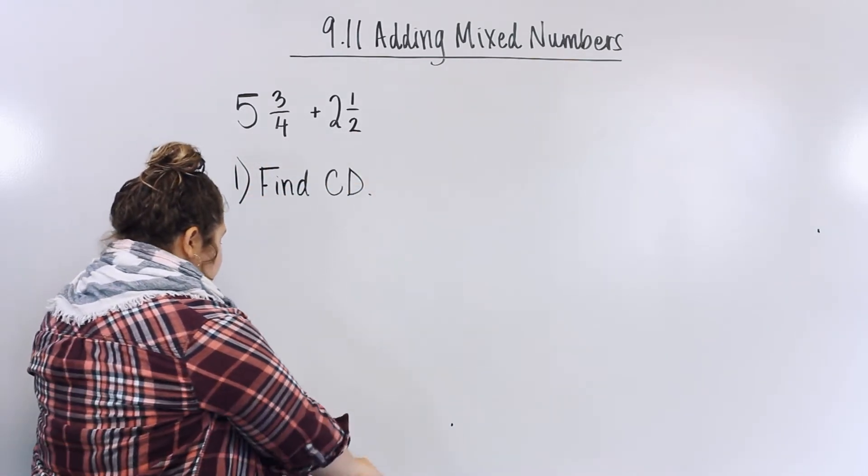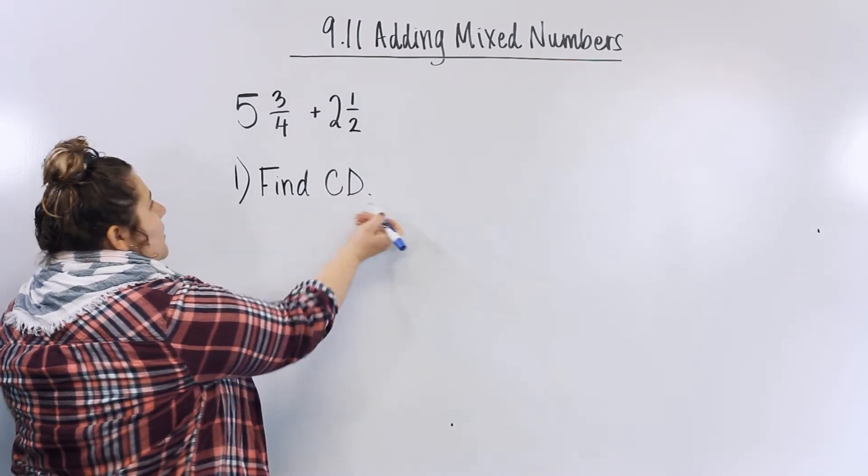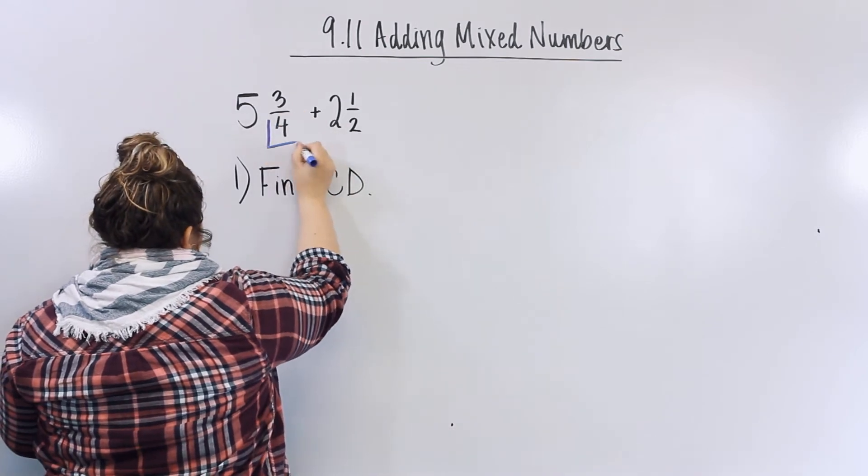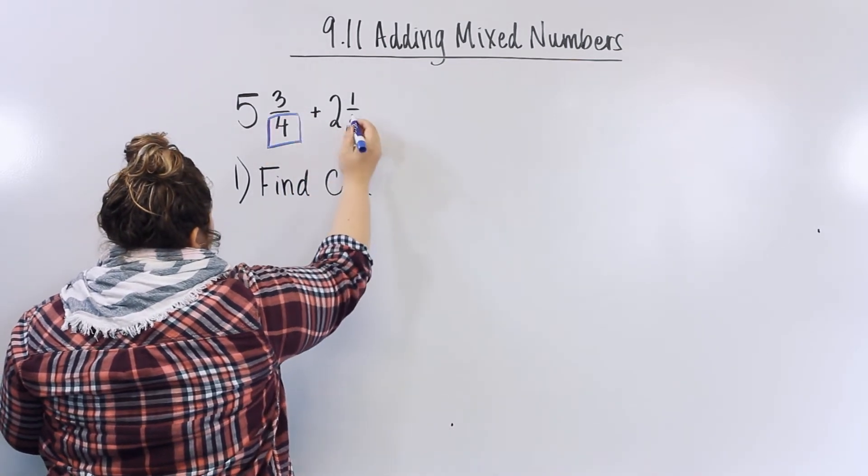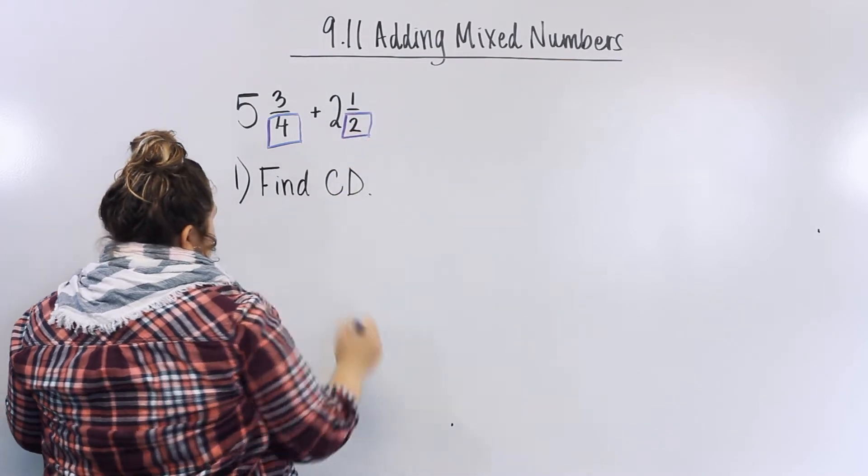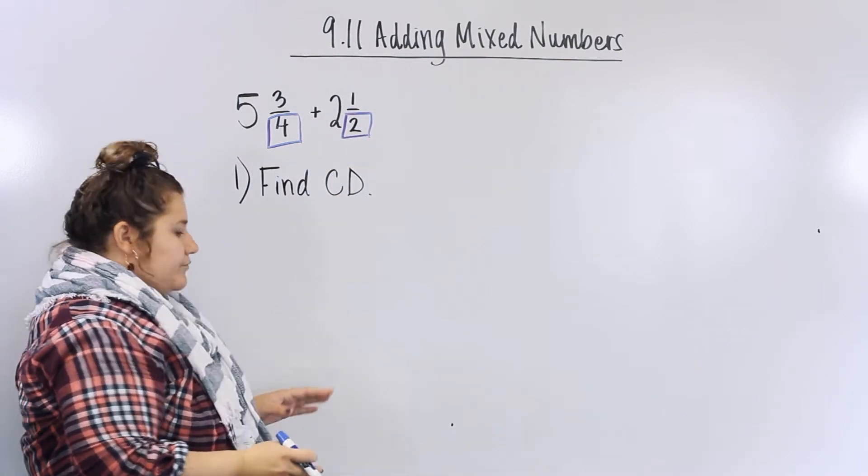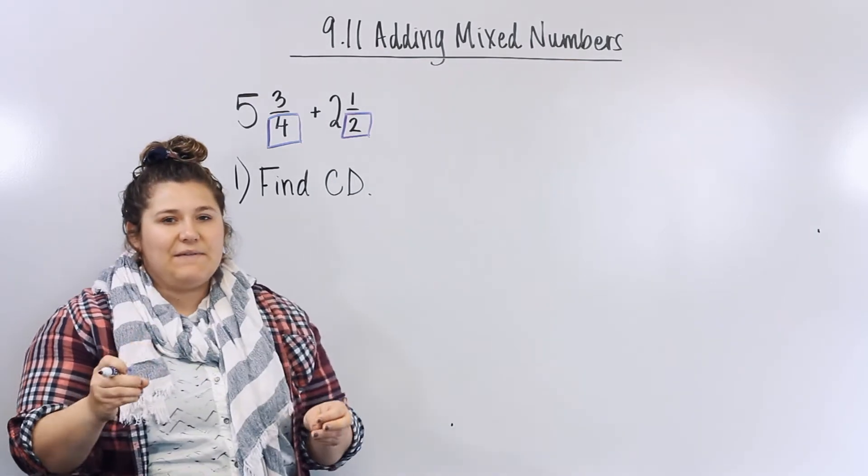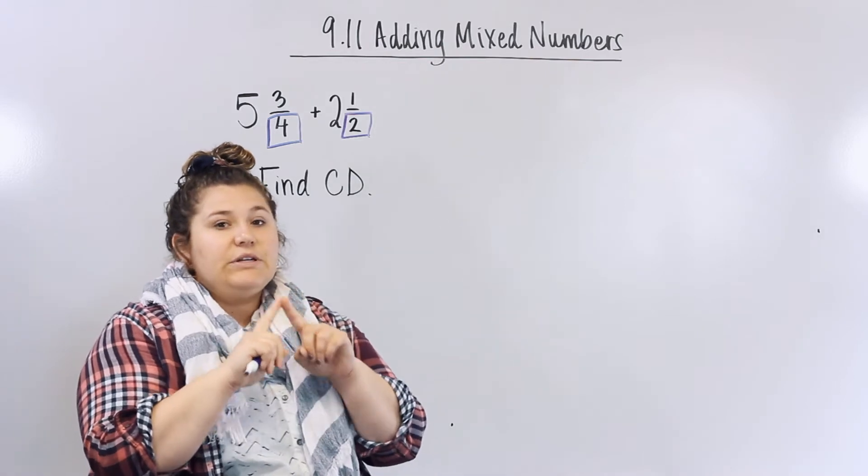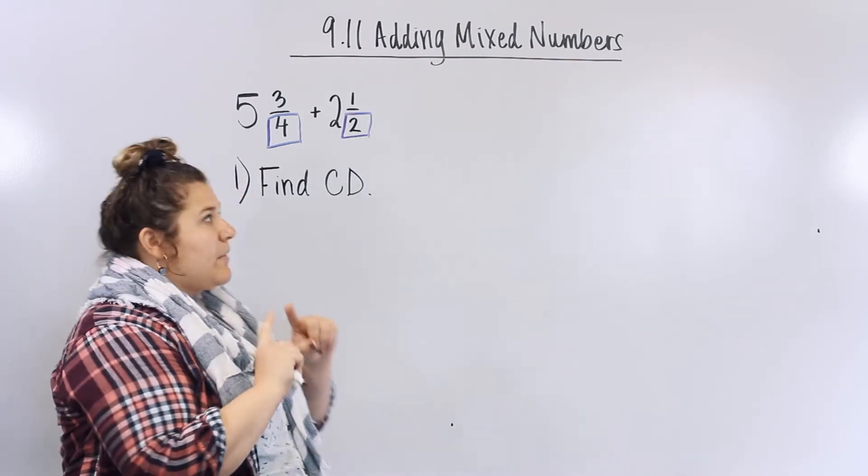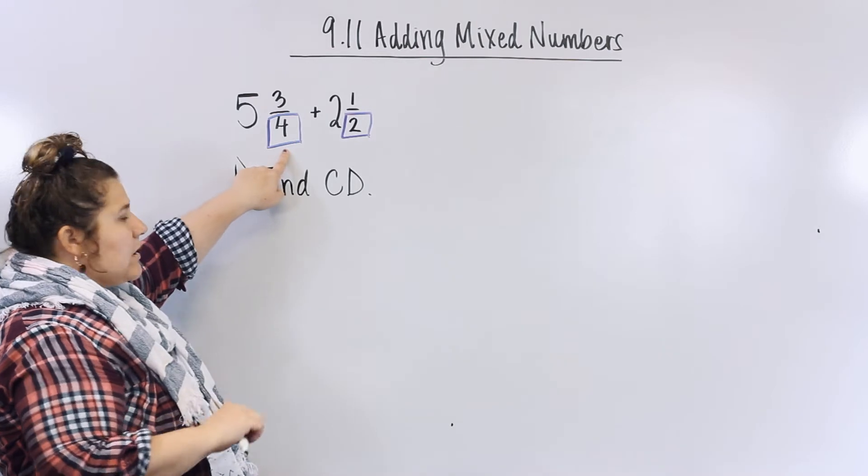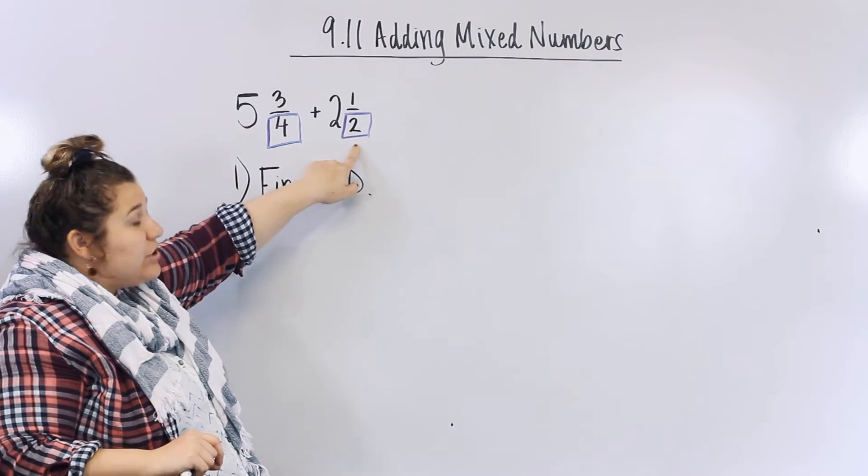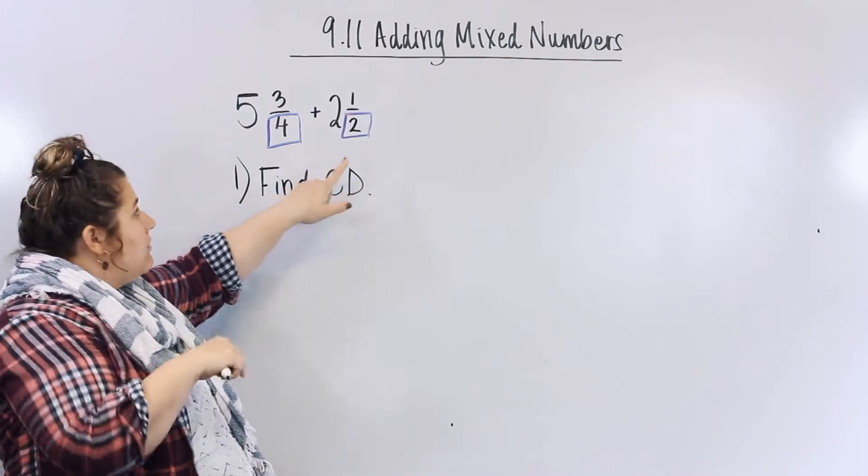So my first step is find the common denominator. The denominator, if you don't remember guys, is this bottom number. We have to figure out what number they both have in common. Remember last time I gave you a tip that you can multiply them together to get a common denominator. But if you look at this problem, it already has the common denominator because I know 2 indeed can go into 4.